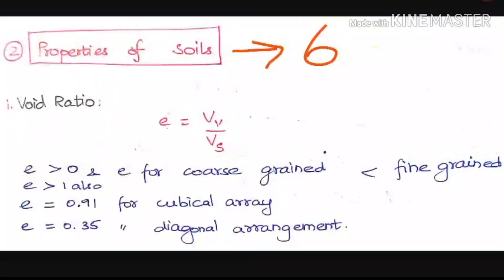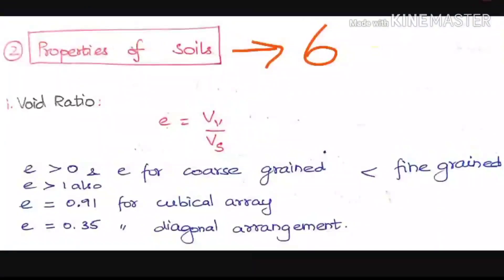E for coarse grain soil will always be lesser than for fine grain soil, because the ratio of volume of voids to volume of solids will be more in fine grain. In coarse grain there will be more gaps but also more solids. In fine grain soil, the volume of solids will be very small and the volume of voids will be relatively more, so E will be greater for fine grain soil.